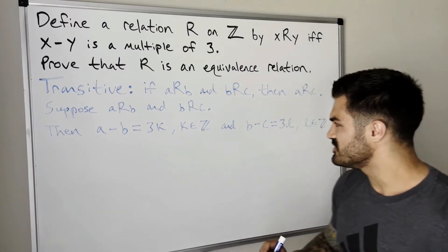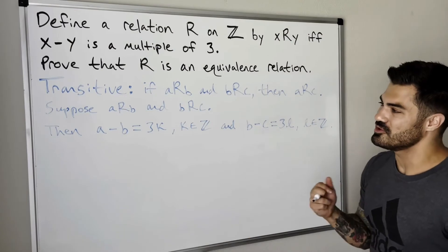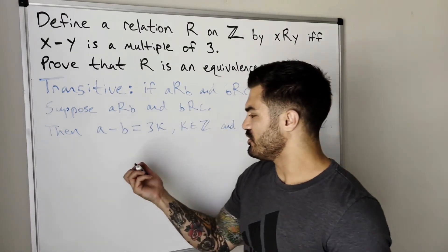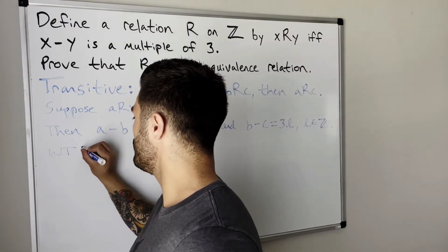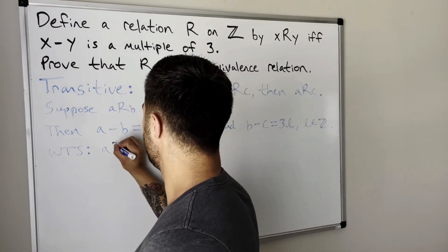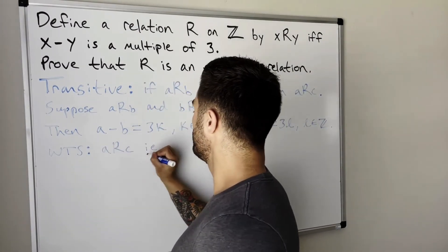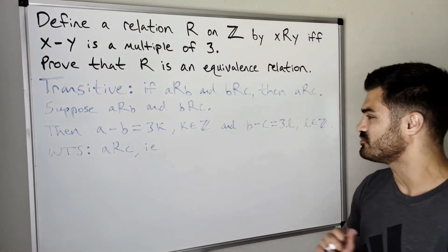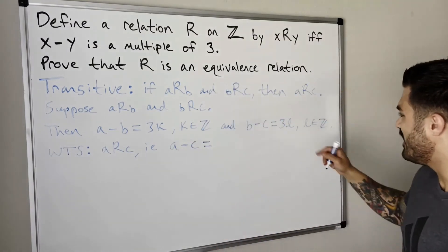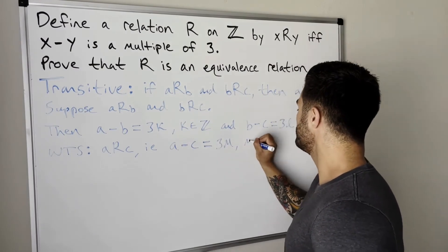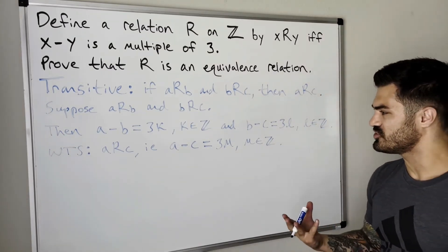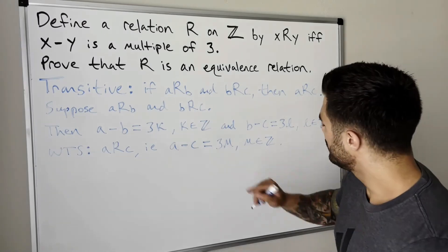So a minus b is three times an integer, and b minus c is three times an integer. We've used our assumption — what do we need to show? We want to show that a is related to c. In other words, we want to show that a minus c is a multiple of three — that a minus c equals three times m, where m is an integer. How can we use our assumption to get there?